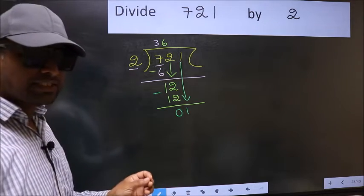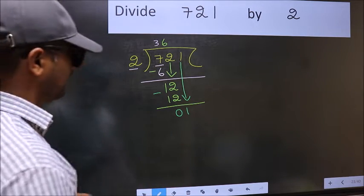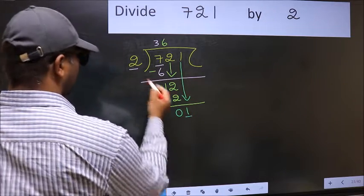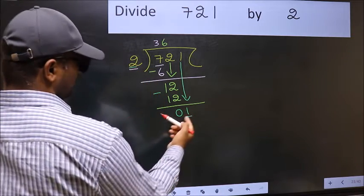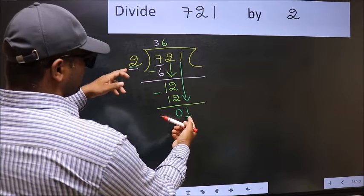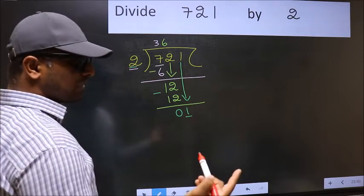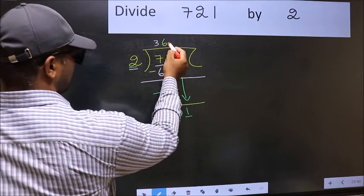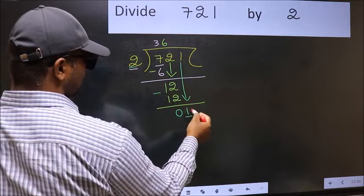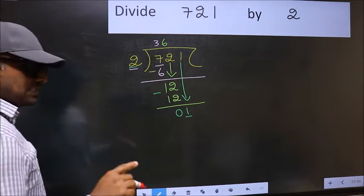And the mistake is this. Here we have 1, and here 2. 1 is smaller than 2. So, what many do is, they directly put a dot and take 0 here. Which is wrong.